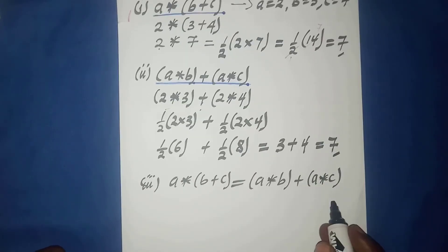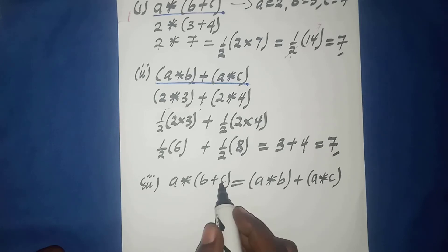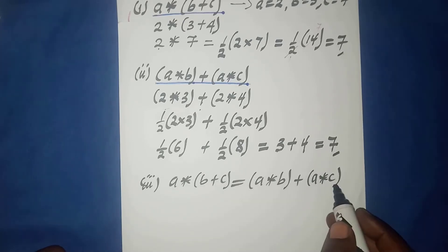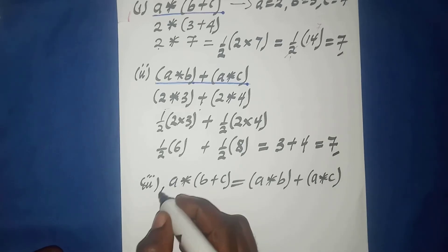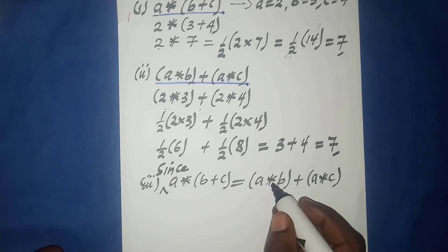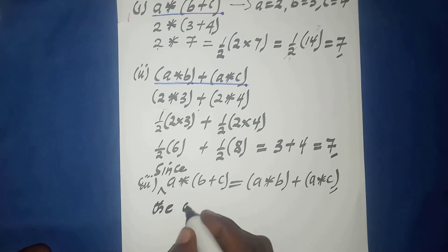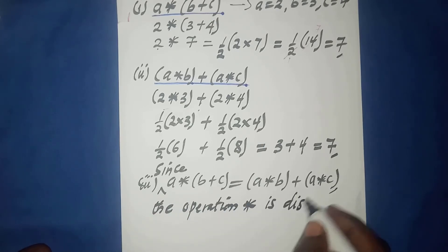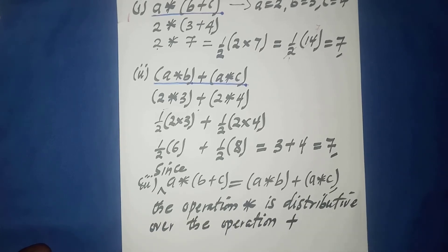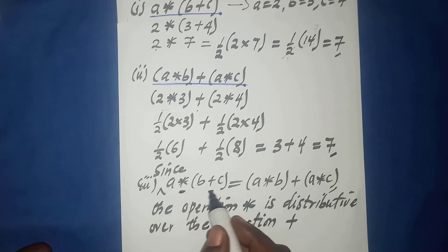Since a star (b plus c) equals a star b plus a star c, it implies the operation star is distributive over the operation addition.